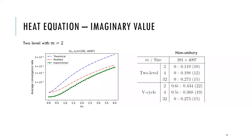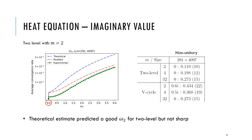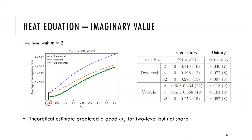Now let's look at imaginary values. The theoretical estimate and experimental convergence rate show the optimal weight is near zero. So in a way, the theoretical estimate predicted a good omega_2 for the two-level method, but not sharply. From the red box in the table for non-unitary weights, the optimal weight for the multi-level method with M equal to 2 is 0.6i, with the shown convergence rate and iteration count. Comparing this with the data for unitary weights, we conclude that using non-unitary imaginary weights does not contribute to better performance. Therefore, using imaginary value weights is not beneficial.